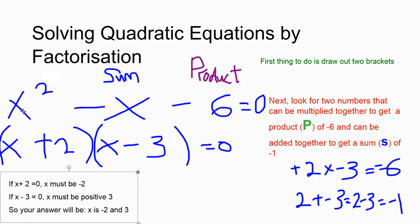The next one we want to do is this one — same procedure. First, draw out the two brackets and put your letter x in both brackets. Then we find a product of negative 6 and a sum of negative 1. Note that this is negative 1 even though the 1 is not written there. The two numbers we need: if you do 2 times negative 3, you get negative 6, and if you do 2 add negative 3, you get 2 minus 3, which is negative 1. So, put positive 2 and negative 3 in your brackets.